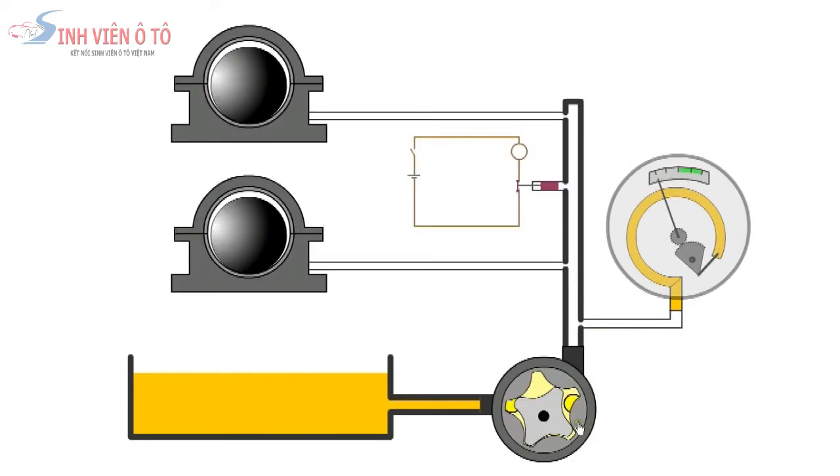In this animation we show a lubrication system. Two bearings, a pressure gauge, pressure switch, ignition switch, battery, oil warning light and gerotor oil pump.